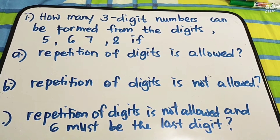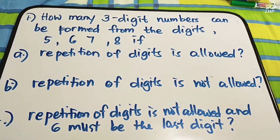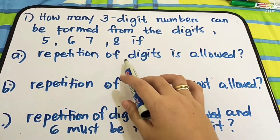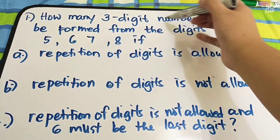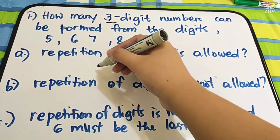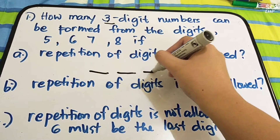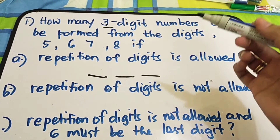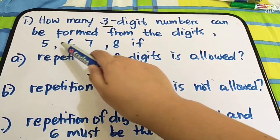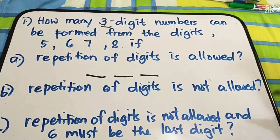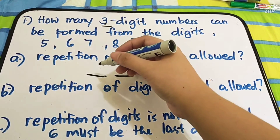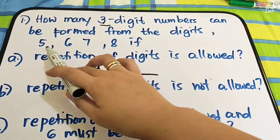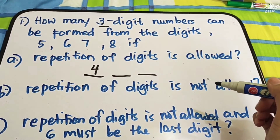So, dito gagamit po tayo ng Fundamental Counting Principles — mas madaling gumamit ng FCP. For letter A, repetition of digits is allowed. Since three-digit numbers lang ang ating kukuhanin, we have three digit positions: one, two, and three. We have four digit numbers involved: five, six, seven, eight. Since repetition is allowed, pwede kang gumamit ng apat na numbers for the first digit.